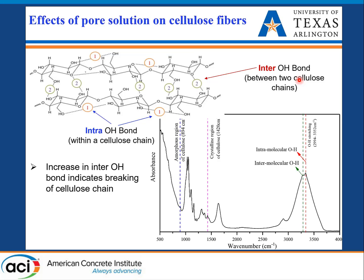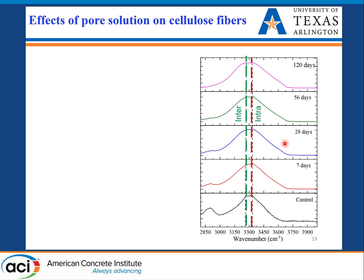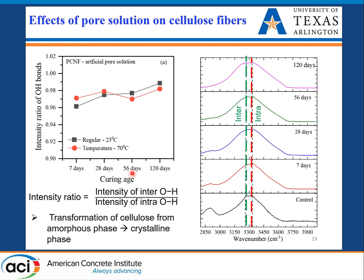Due to alkali degradation, if the cellulose chain is breaking — either separating glucose units or forming new cellulose chains — we will see an increase in intermolecular hydroxyl bond intensity. From FTIR spectra collected up to 120 days, we did see an increase in inter-hydroxyl bond intensity. Quantifying the ratio of inter-hydroxyl to intra-hydroxyl bond intensity confirmed that our cellulose is degrading.